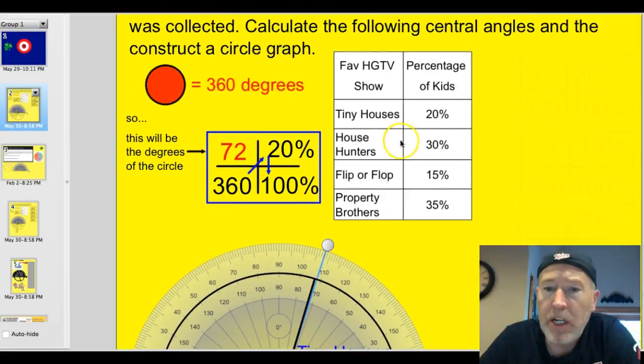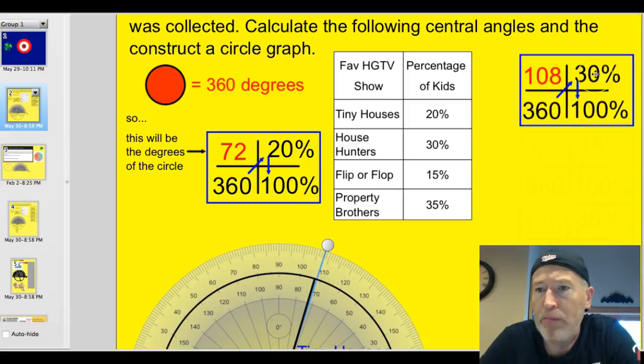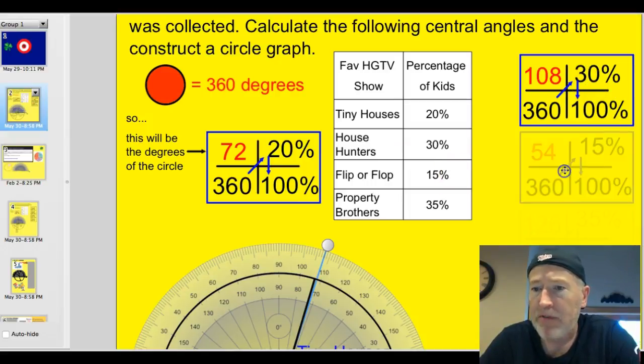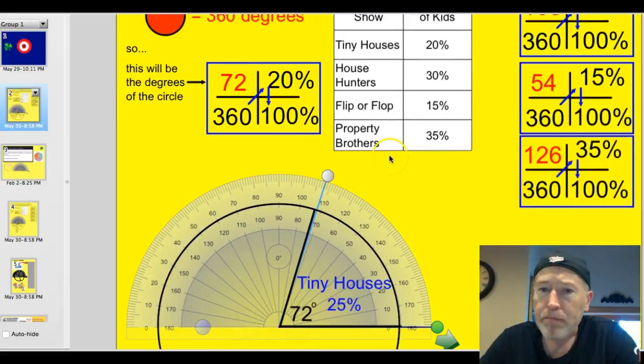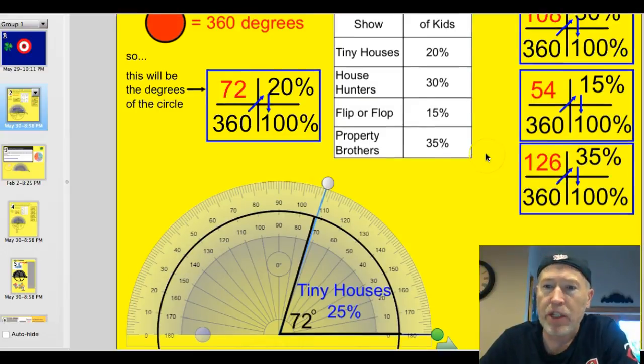So tiny houses would have a 72 degree angle. It represents 25% of the kids. Okay, let's take a look at the other ones. Now we have house hunters at 30%. If you put 30% into the box, and you take 360 times 30%, divide by 100%, you'll get 108. Again, I don't want to do this every time, but I want you to understand that we've created two equal fractions here. 30% out of 100 is the same as 108 degrees out of 360 degrees. So I can put in 108. And let's go ahead and do flip or flop too. If this is 30% and flip or flop is 15%, again, we can put it in the box, and it's kind of obvious. It'll be half of 30%. Half of 108 is 54 degrees out of the circle. And then the final one, Property Brothers at 35%. If you pop that into the box, 360 times 35%, you divide by 100, your missing number is 126 degrees.